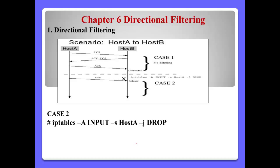Directional filtering means when we configure IP tables as the firewall on a Linux system, according to the direction, the result of our filtering will be different. For example, Case 1 is no filtering.